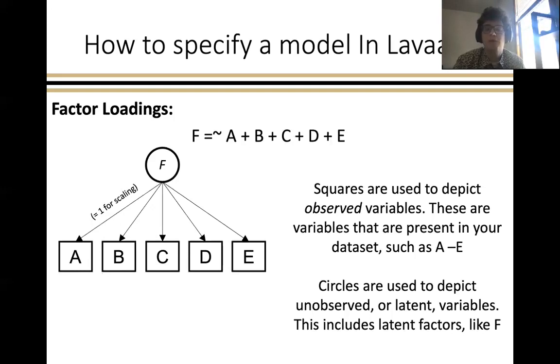To specify factor loadings, which refers to the regression relationships between this unobserved latent factor and these observed variables a through e, which we'll talk a little bit more about later in this presentation, you would write f and then equal sign tilde and then a through e.